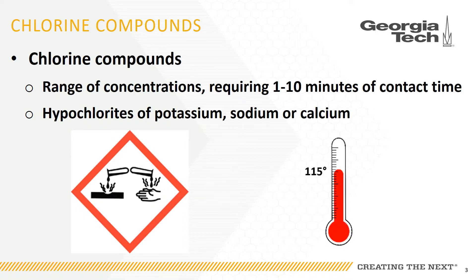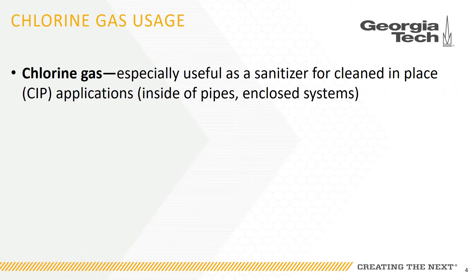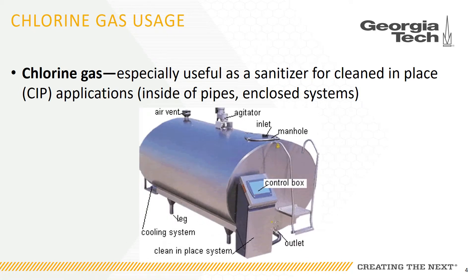All chlorinated mixtures can produce irritating or corrosive gas if heated to temperatures above 115 degrees Fahrenheit, which poses an immediate health and safety hazard to employees. Chlorine gas is also used when cleaning out food processing piping or vessels, enclosed systems — also referred to as cleaning in place, or CIP — which means the equipment is not taken apart, but rather cleaned in place with no employee exposure.